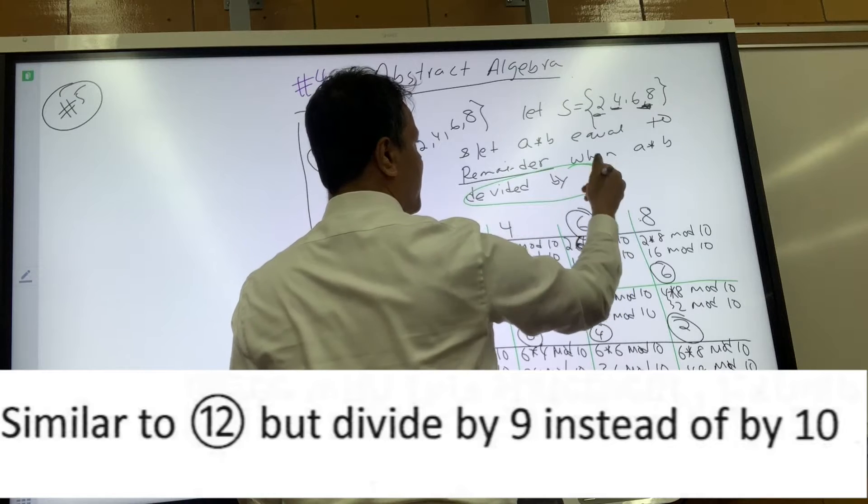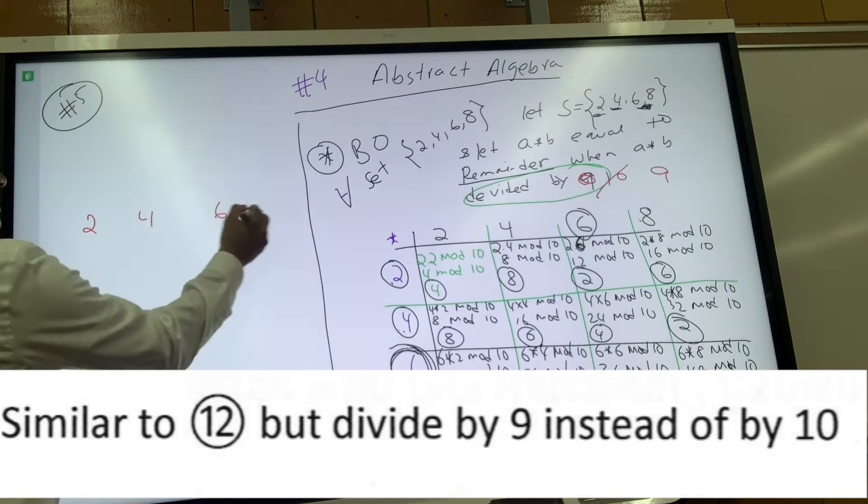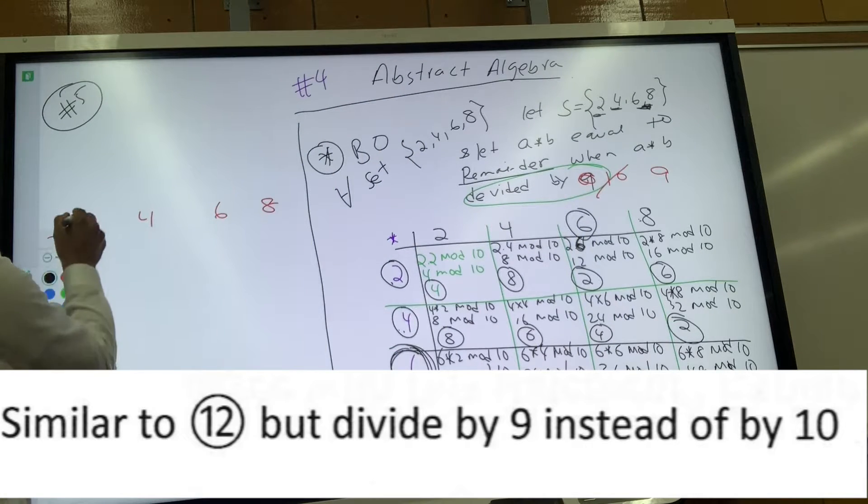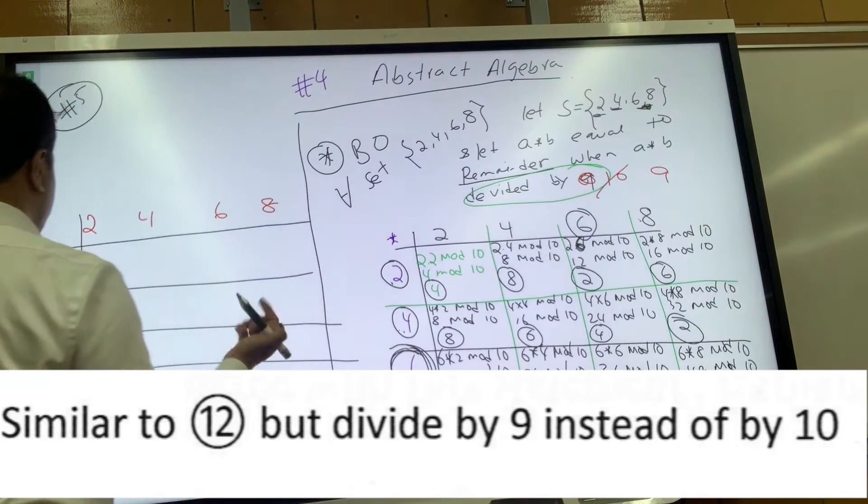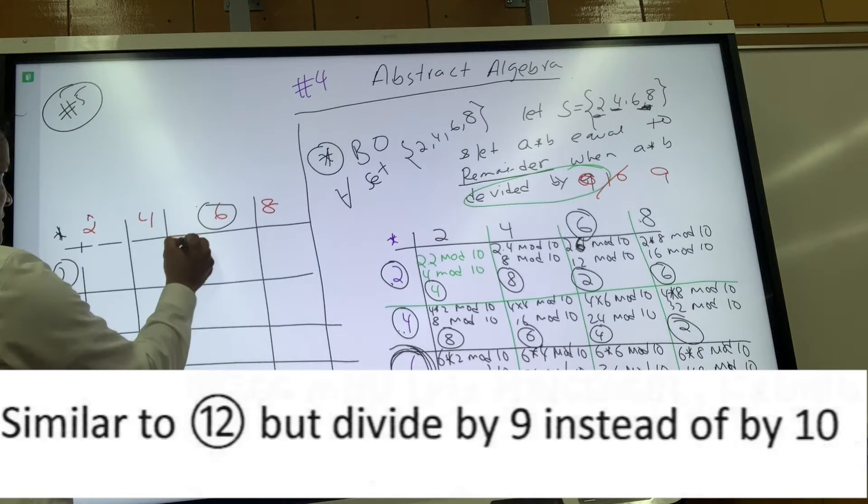What happens when you divide by 9 instead of by 10? Let's use the same set again: 2, 4, 6, 8. Let's write 2, 4, 6, 8 on the side and put the star on top.